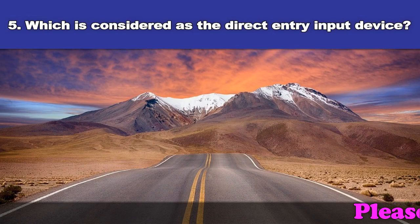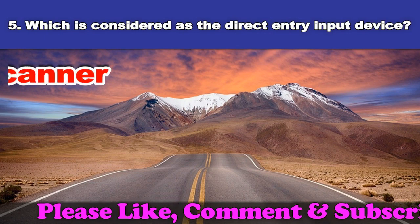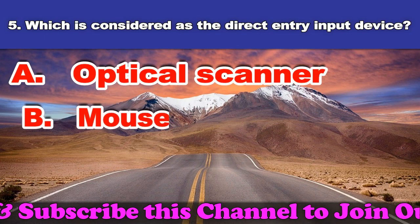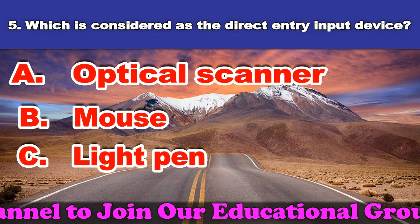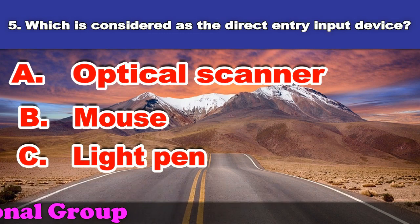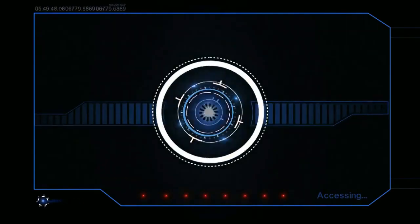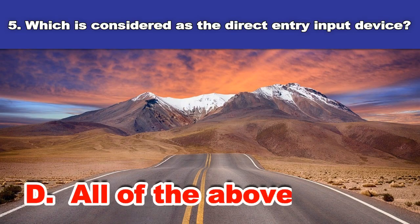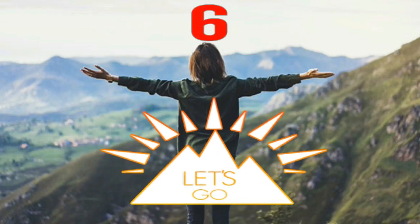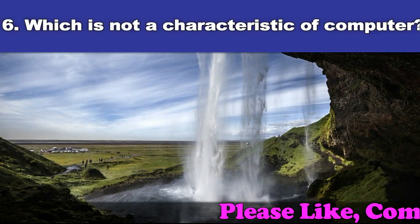Fifth question: Which is considered as the direct entry input device? A. Optical scanner. B. Mouse. C. Light pen. D. All of the above. And the answer is all of the above.